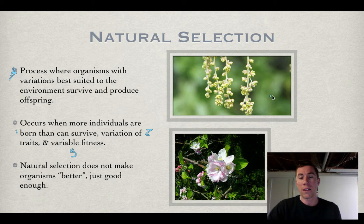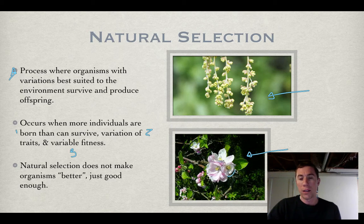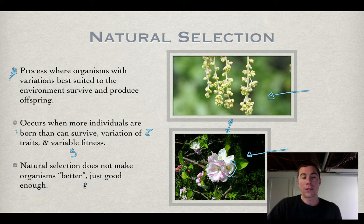As an example, we have two different types of flowers. This tree has developed long, skinny beads of flowers. Down here, I believe we have an apple tree, and the apple tree has evolved these type of flowers. Both of these types of flowers work for the actual organism. So natural selection does not make organisms better — it just makes them good enough to survive.